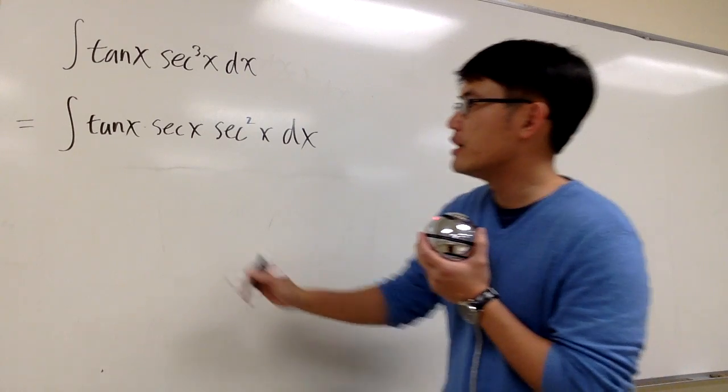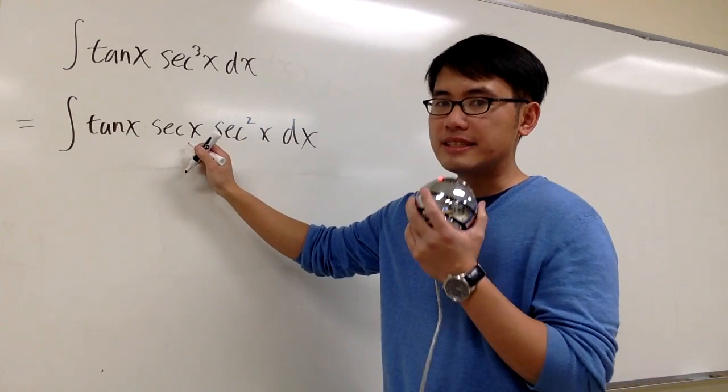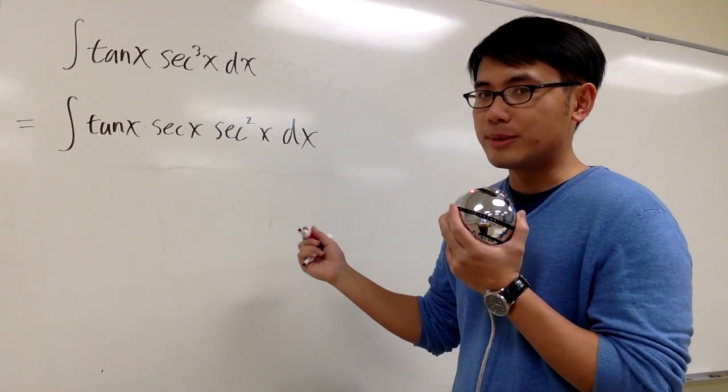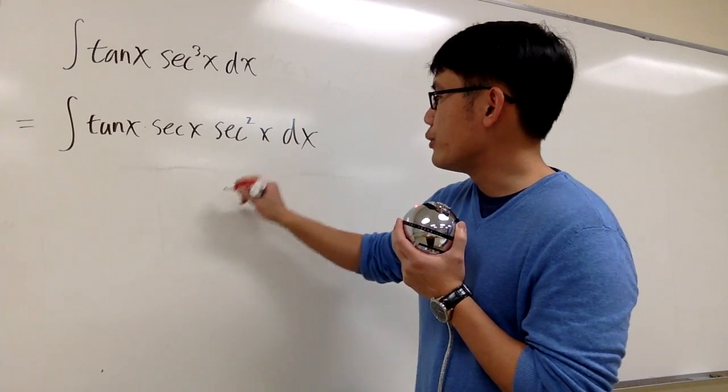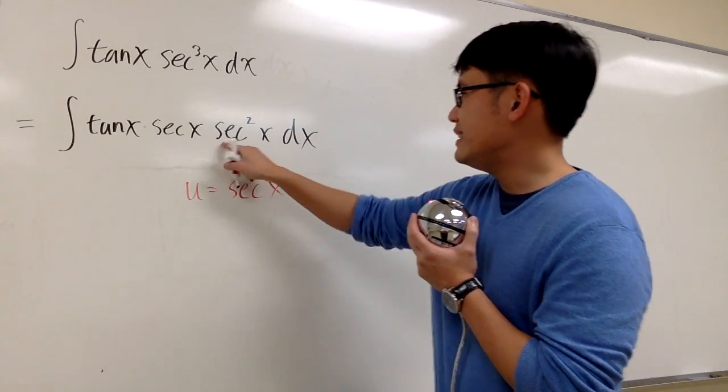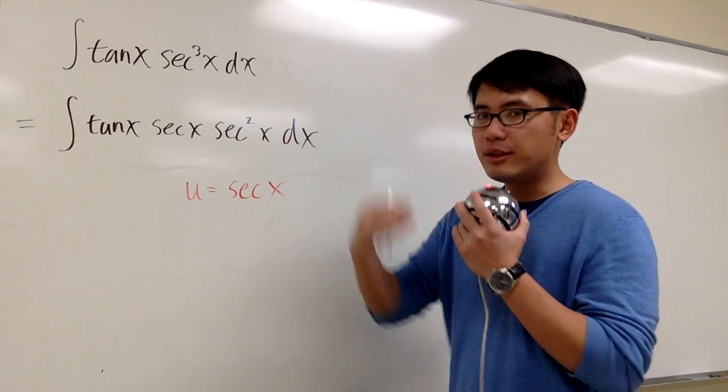And the reason for that is because now I look at this. This is tangent x secant x, and that's exactly the derivative of secant x. If I would like to use the u-substitution, that will do the work already. I'm going to let u equal to secant x, this is kind of like the inside function, because here we have secant x and then to a second power.